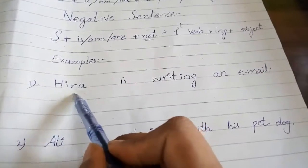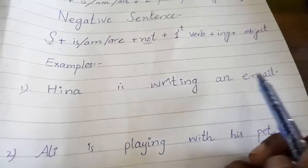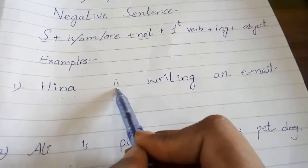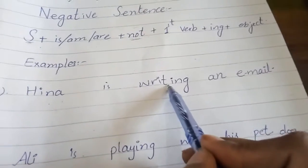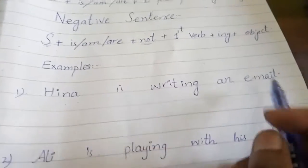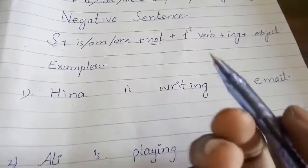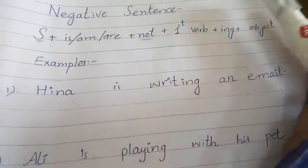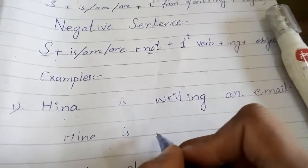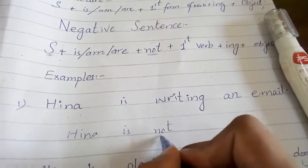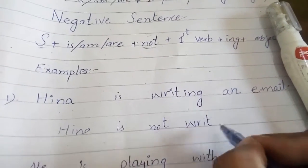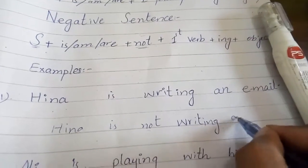For example, let's do some practice with a negative sentence. The affirmative sentence is: 'Hena is writing an email.' Hena is the subject, 'is' is the helping verb, 'writing' is the '-ing' form of 'write', and 'an email' is the object. If you want to change this into a negative sentence, we write: 'Hena is not writing an email.' You see 'not' is the main addition in the negative sentence.